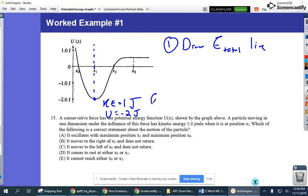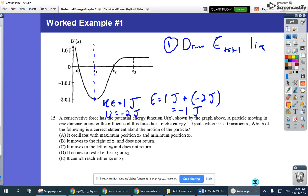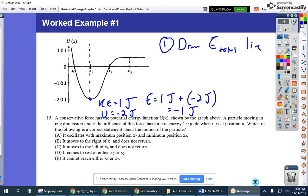Well, what is our total energy? It should be 1 joule plus negative 2 joules. So I'm going to say that our total energy is negative 1 joule. And if it bothers you that our total energy is negative, that's okay. Remember, potential energy doesn't really have a zero. So let's just draw a line at negative 1 joule. That's our total energy line.